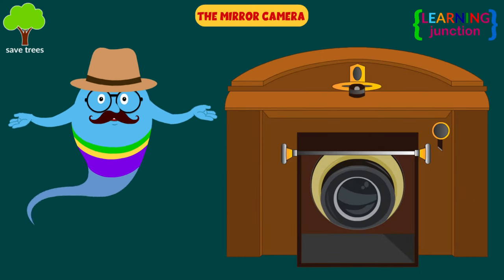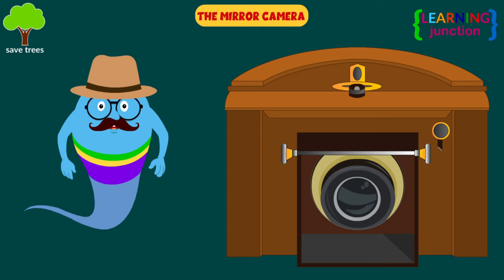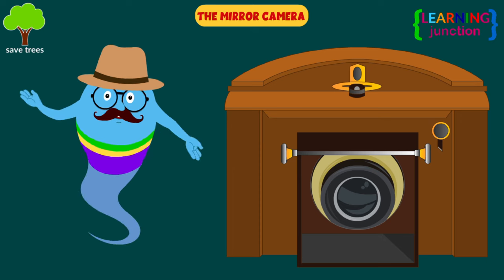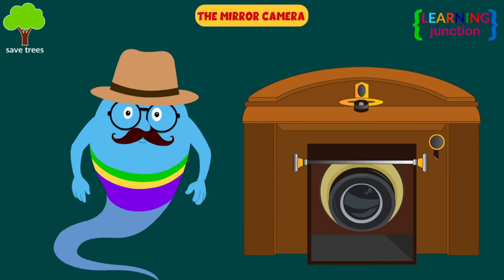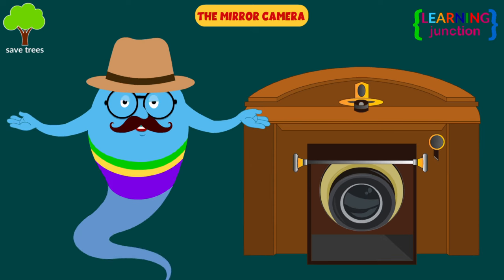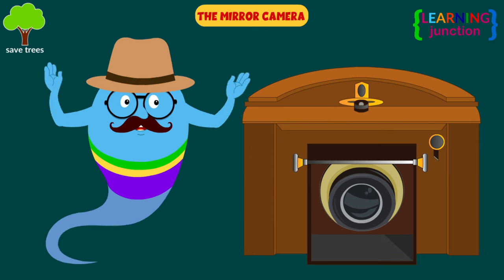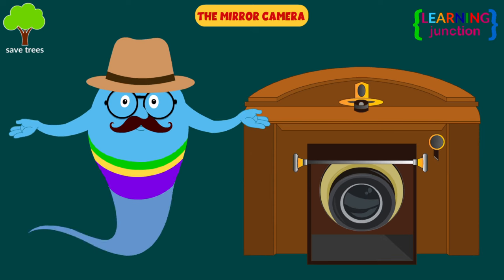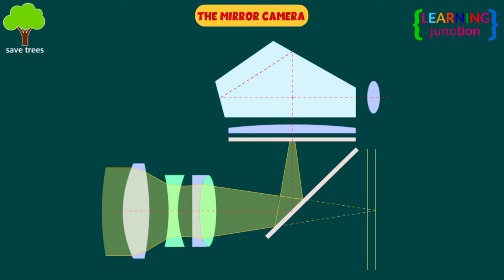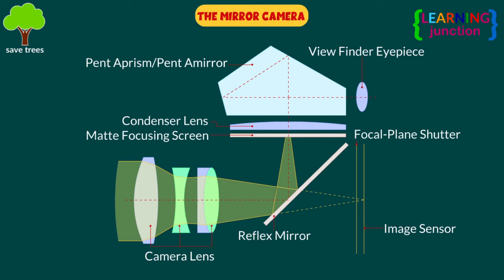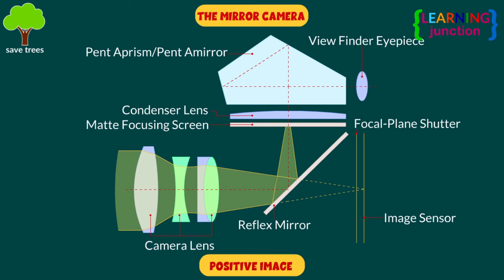The mirror camera. The previous camera system's images faded quickly. This was corrected in the mirror camera, which produced a positive image instead of a negative one with reversed colors.